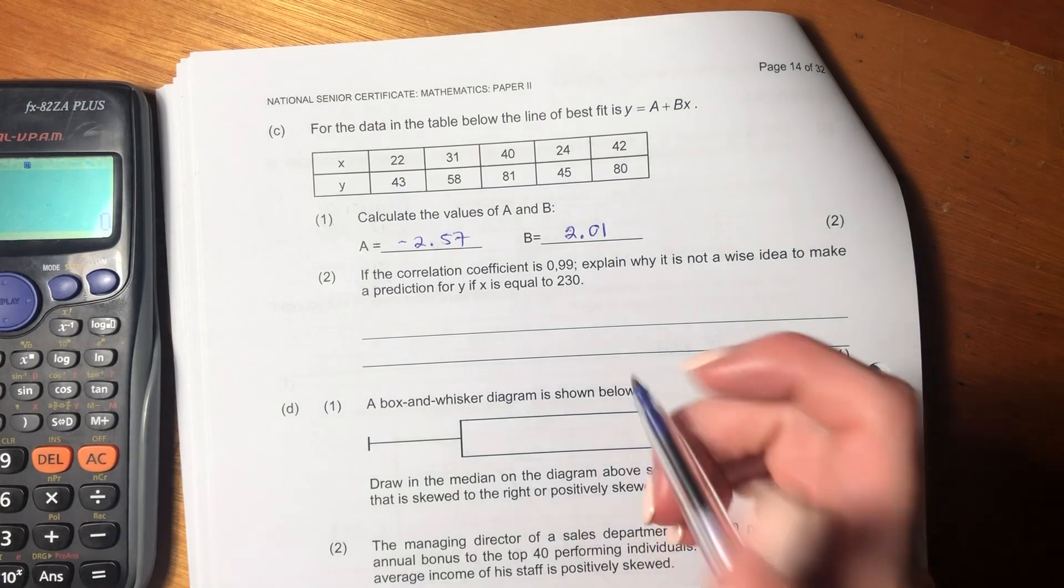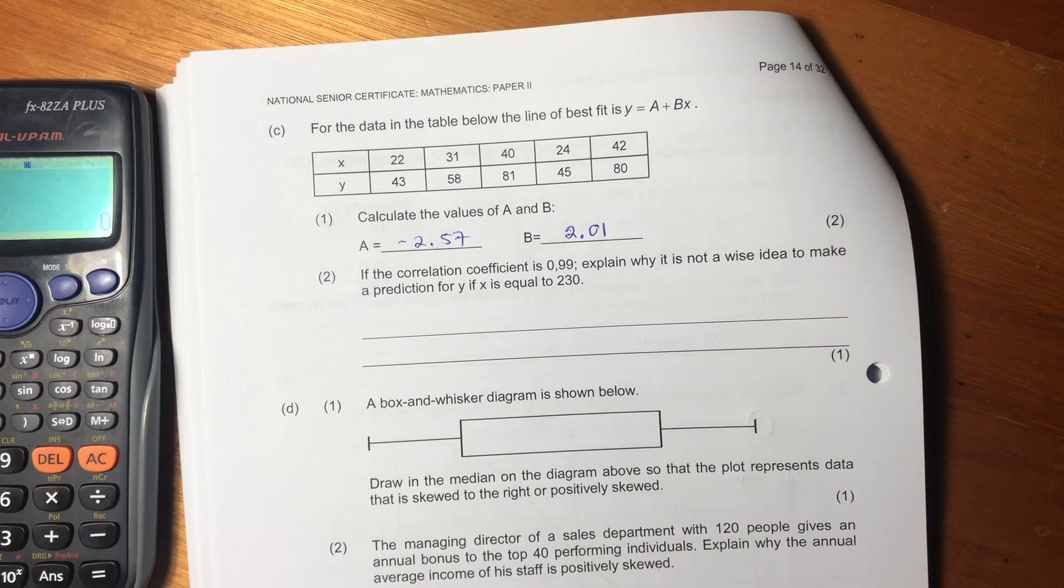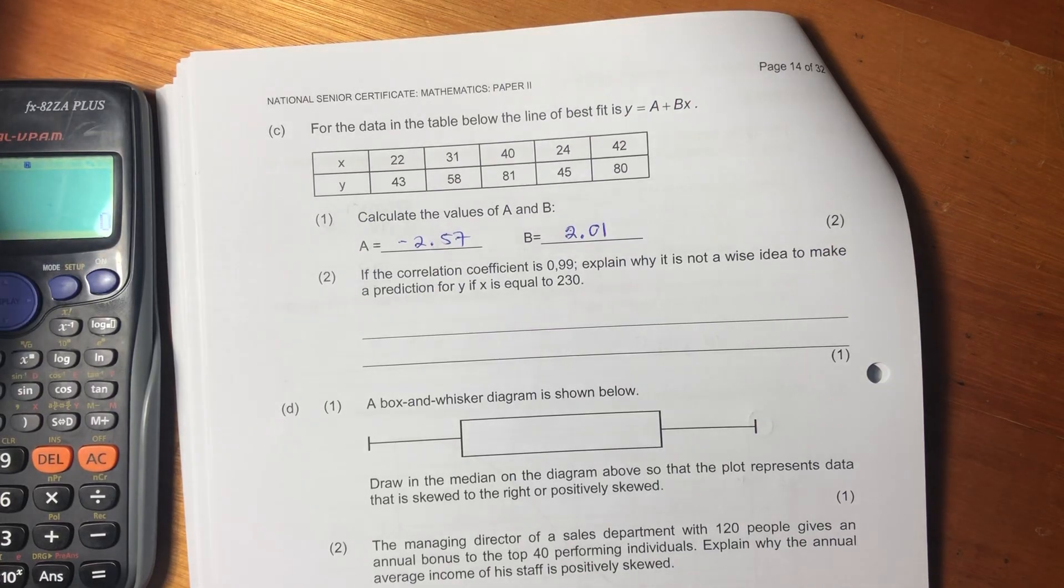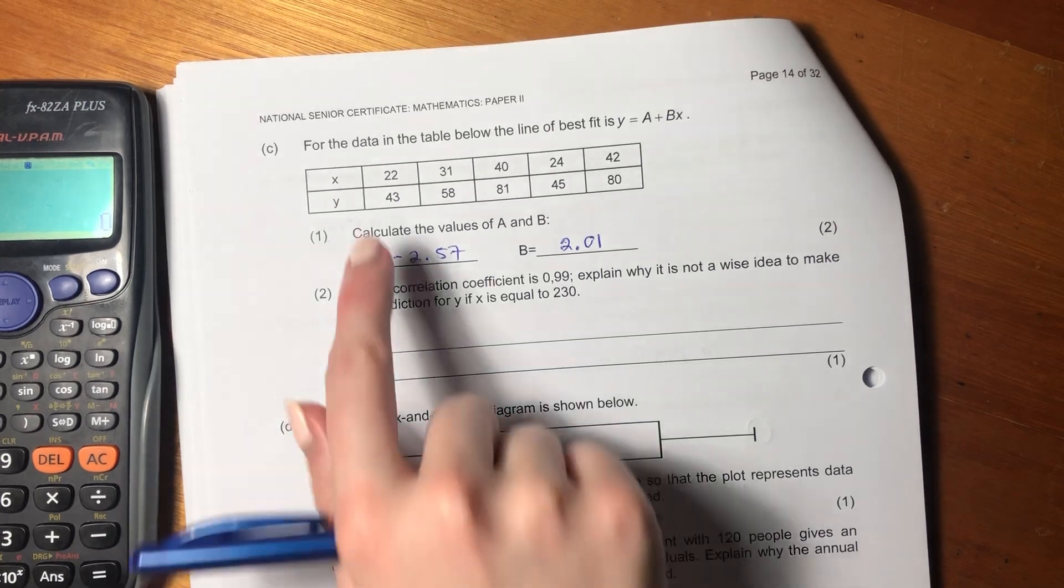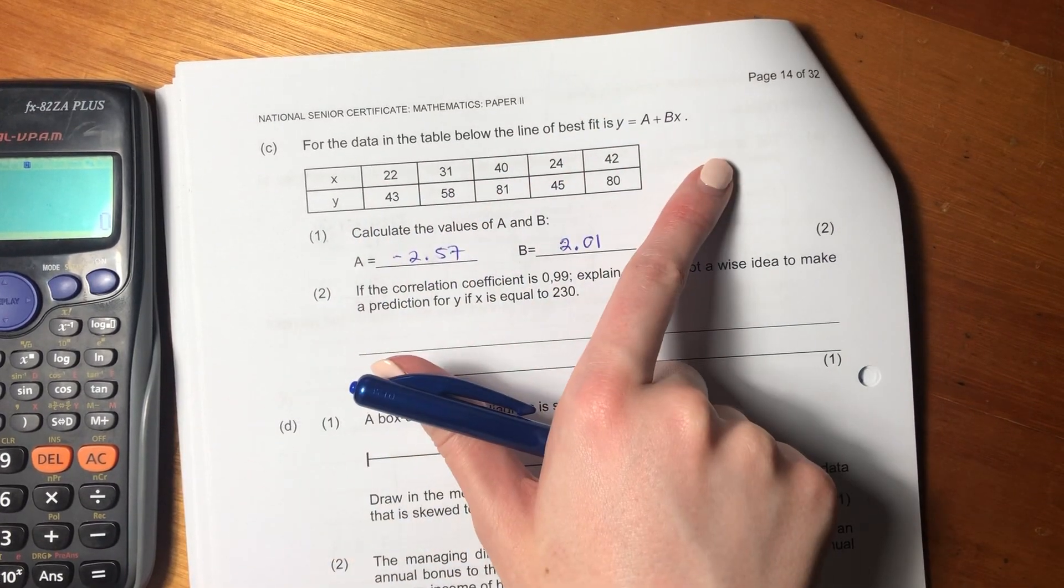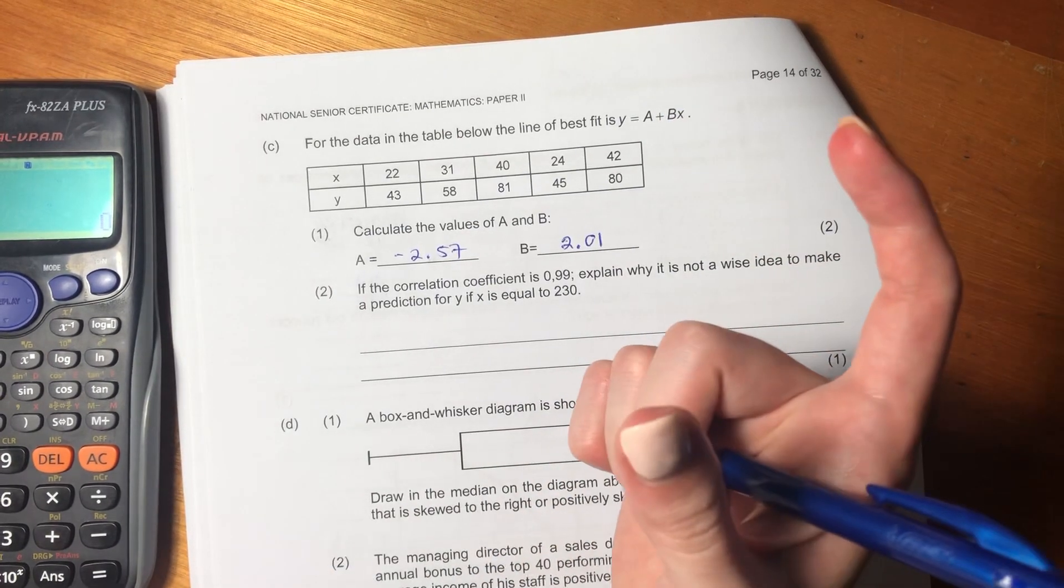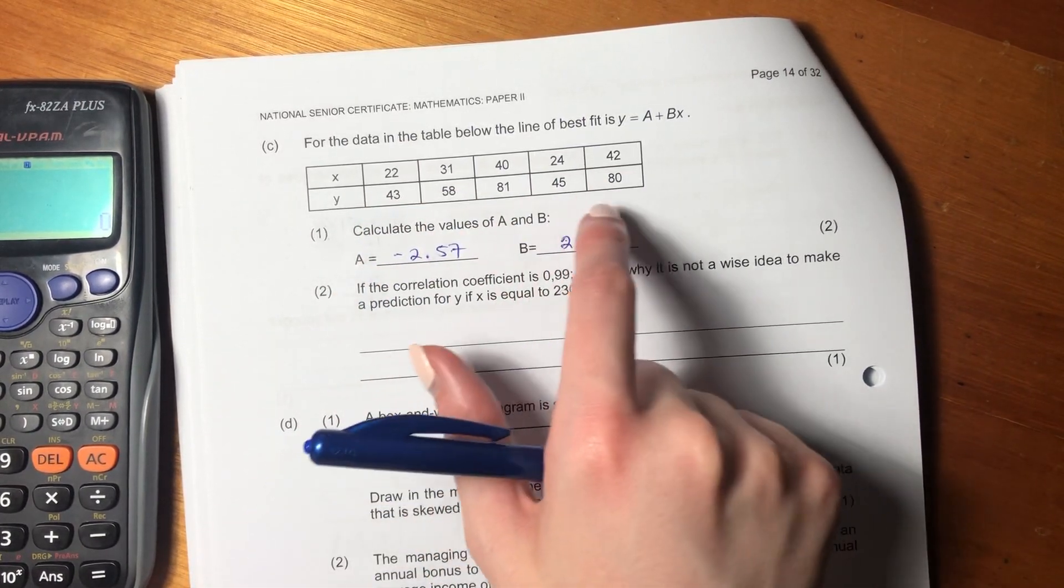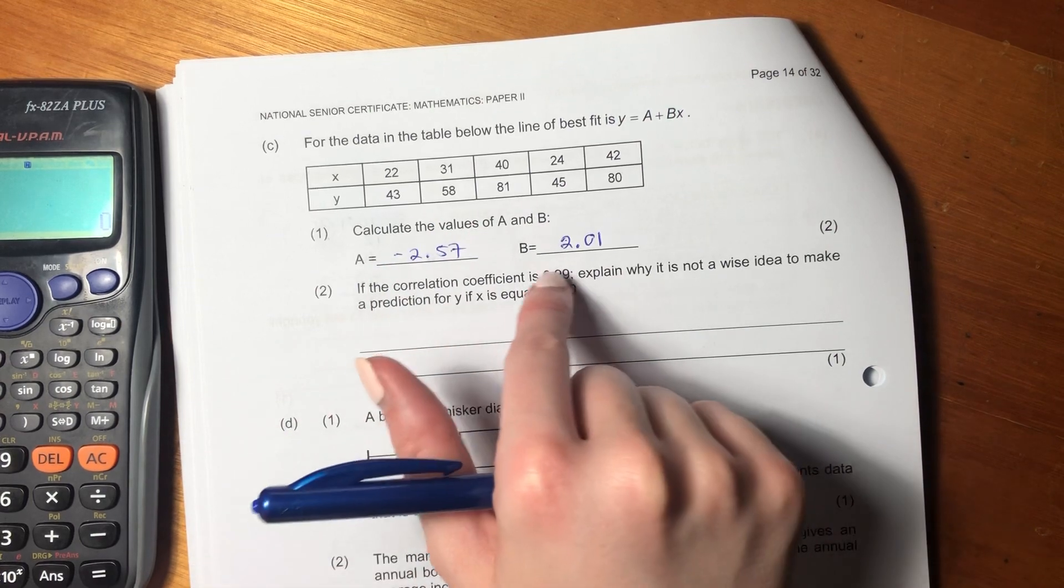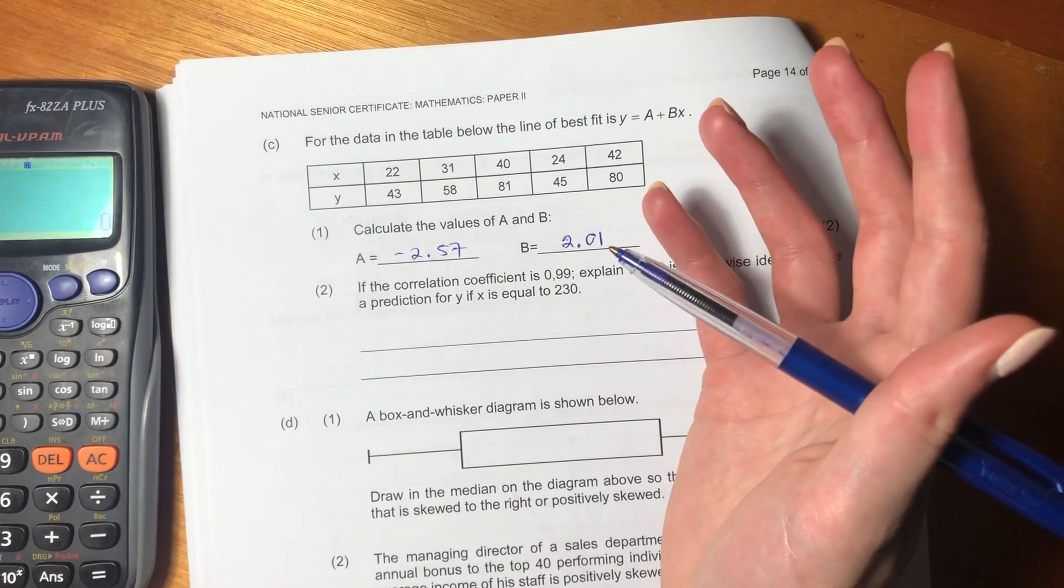It says, if the correlation coefficient is 0.99, explain why it is not a wise idea to make a prediction for Y if X is equal to 230. Well, the obvious answer here is that 230 isn't within our data. Do you see that? 230 would be sitting outside our data. So it's a form of extrapolation. So extrapolation always has a risk, because we know that the relationship that we've got here, that we have calculated, works for inside our data. But outside our data, we don't actually know. There could be something vastly different.